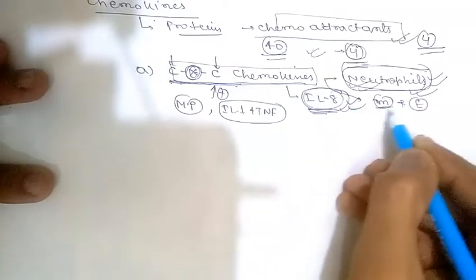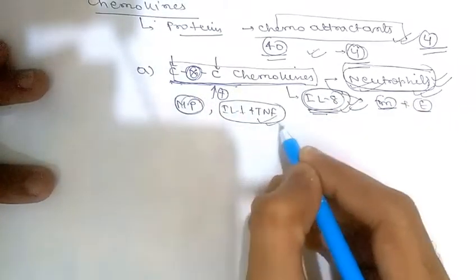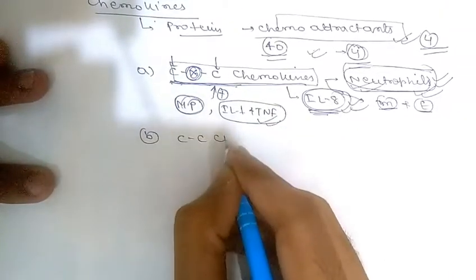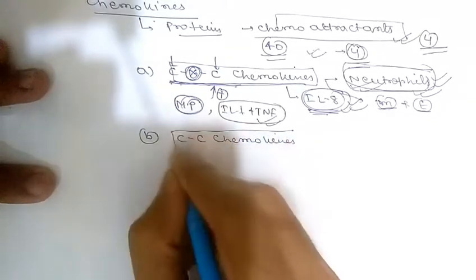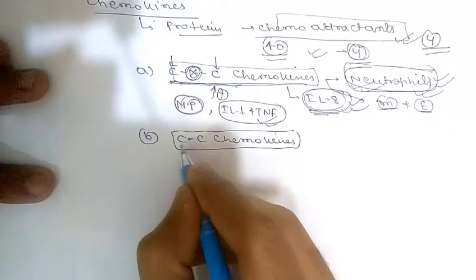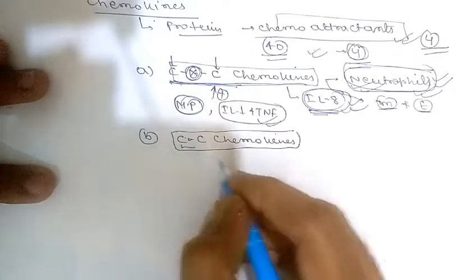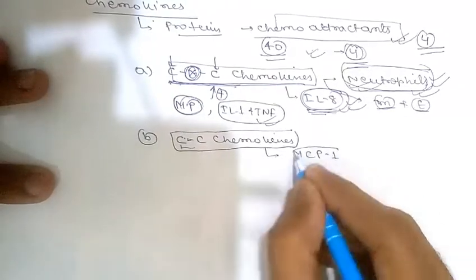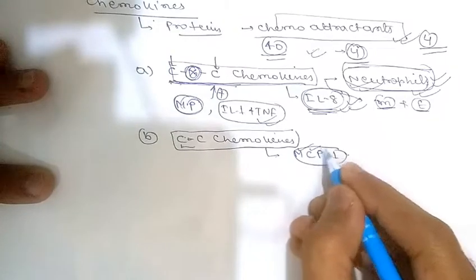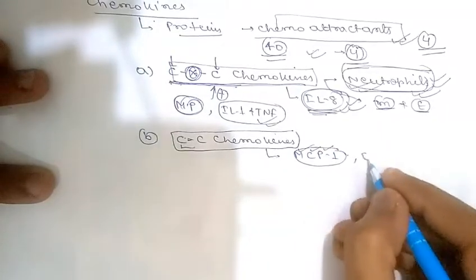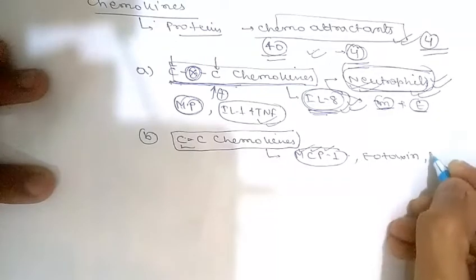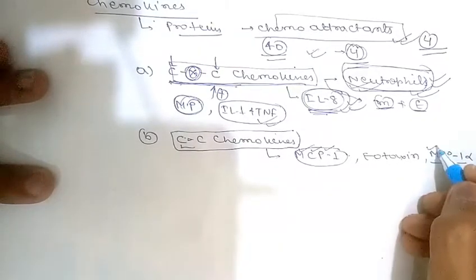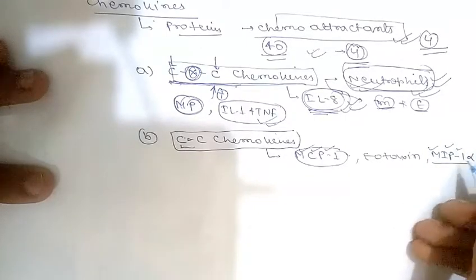The second group is CC chemokines, where the two cysteine residues are continuous with no amino acid separation. CC chemokines include MCP-1 (monocyte chemo-attractant protein), eotaxin, MIP-1 alpha (macrophage inflammatory protein 1 alpha), and RANTES (regulated and normal T cell expressed and secreted).